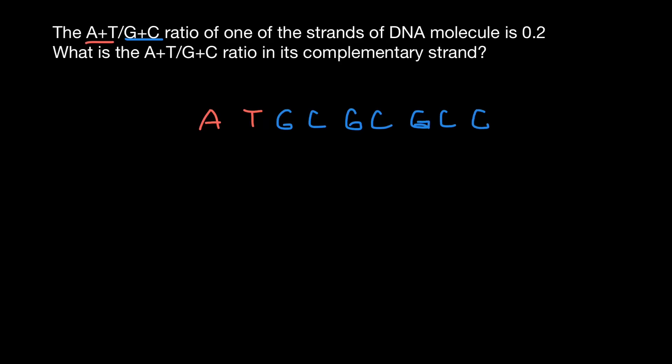Guanine and cytosine, guanine and cytosine, and guanine and cytosine. So let's count: 1, 2, 3, 4, 5, 6, 7, 8, 9, 10. So our ratio is 2 to 10.